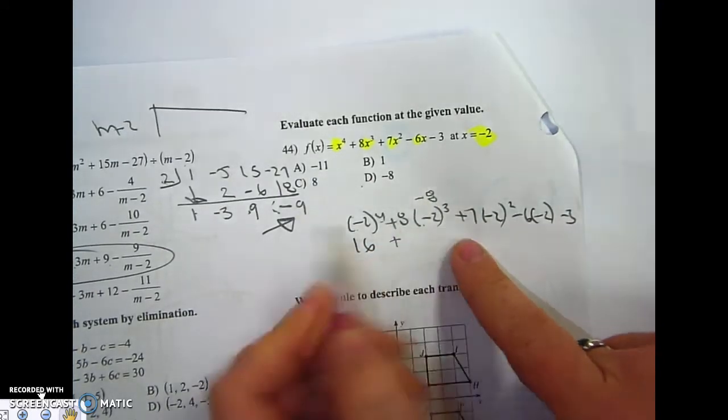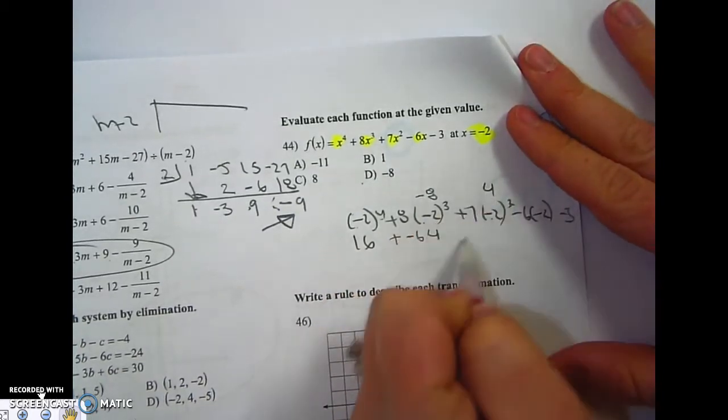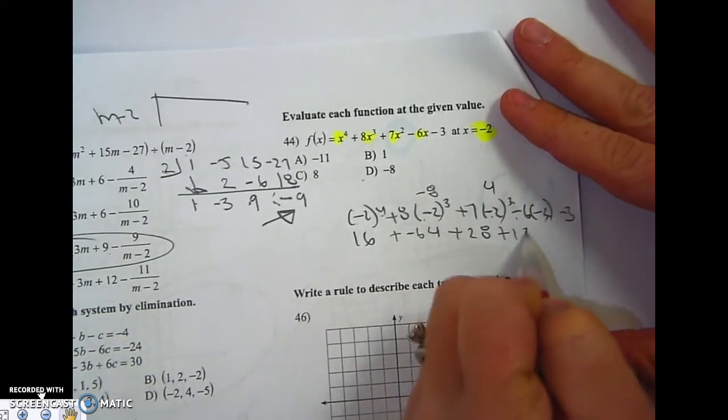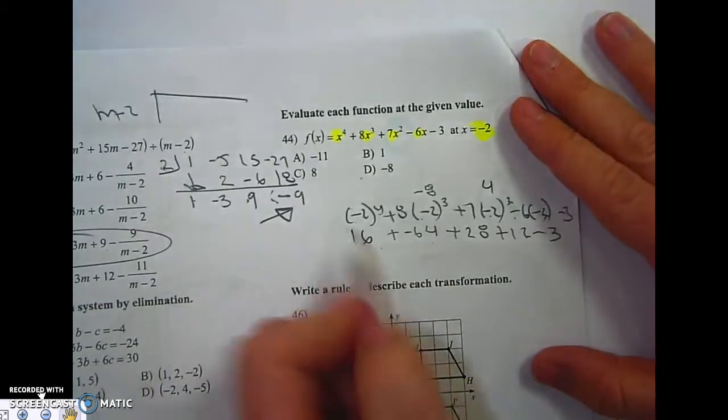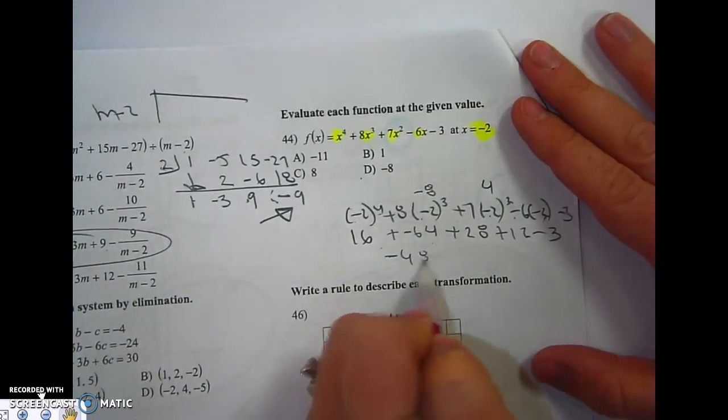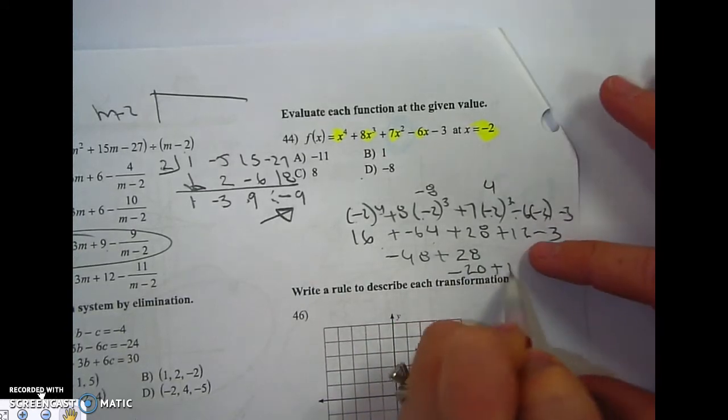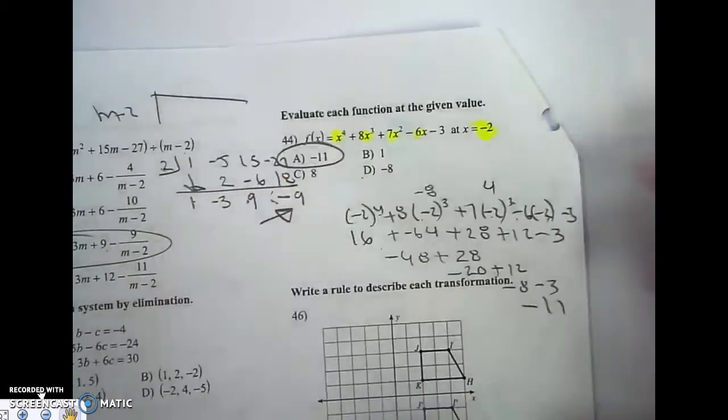But then you multiply that by 8, and that's negative 64. Negative 2 squared is 4, times 7 is 28. And a negative times a negative is a positive. 16 minus 64 is negative 48, plus 28 is negative 20, plus 12 is negative 8, minus 3 is negative 11. Boom. I'm good to go.